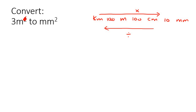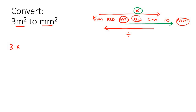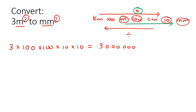So forget about the twos for now. What we need to realize is that we are going from meters, which is over here, to millimeters, which is over here, and we're going to go that way. So when you go to the right, you multiply. So you're going to say three, multiply by all the numbers that you pass — so you're going to do a hundred. Now here's the trick: just multiply it twice, so just do it twice. We did a hundred twice, and then the next number that we would have passed would have been ten, but just do that twice, because there's a two over there.